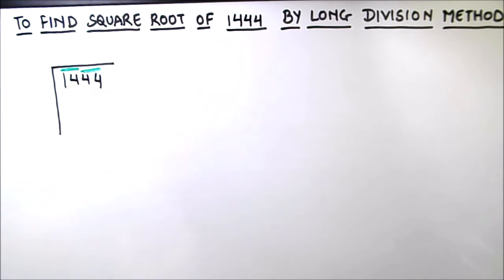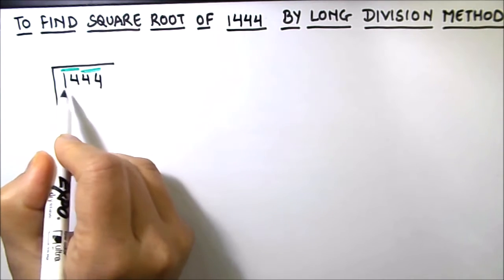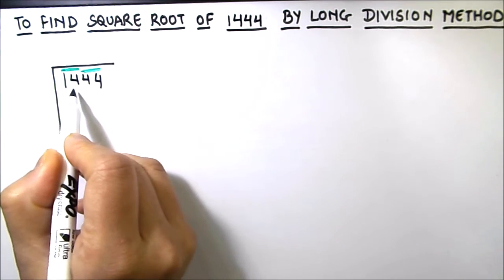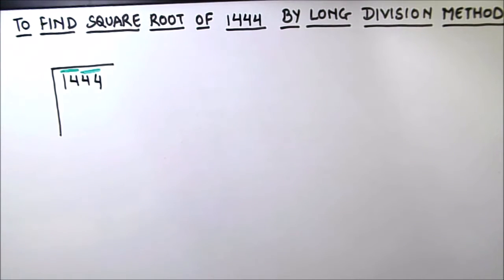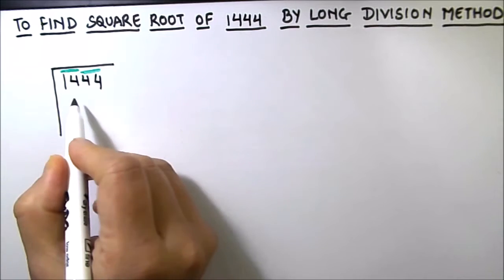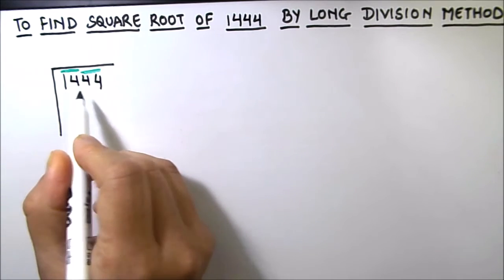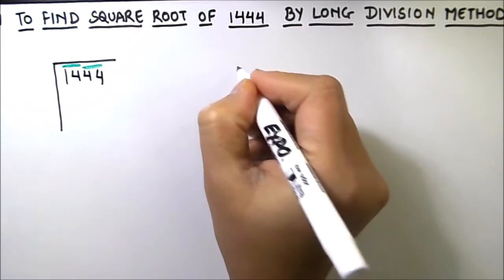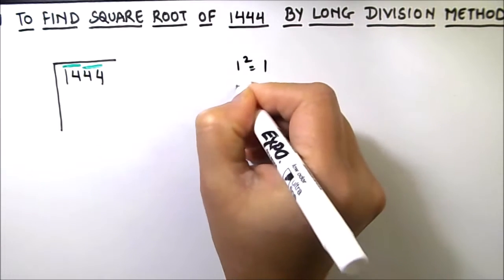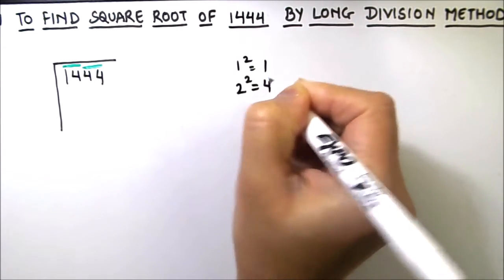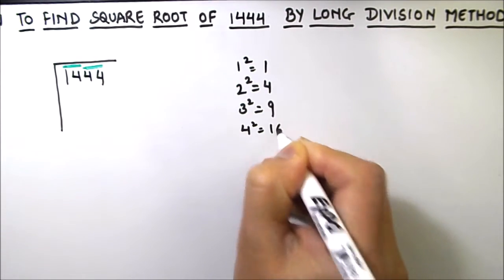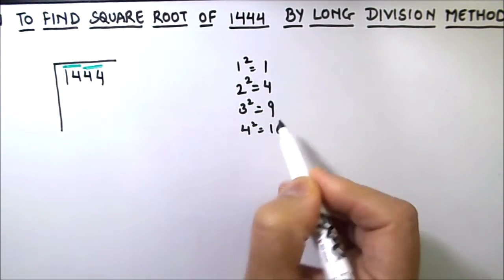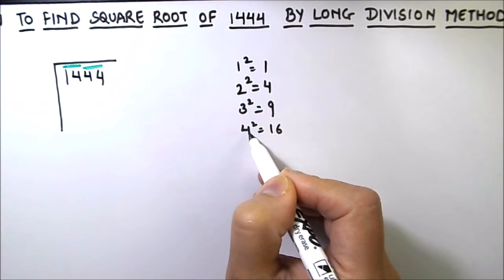Now we will start dividing the number starting from the leftmost group. So we have 14 as our leftmost group. We have to find such a square number whose square is equal to 14 or just less than 14. So we know that 1 squared is 1, 2 squared is 4, 3 squared is 9, and 4 squared is 16. So our number 14 lies in between 3 squared and 4 squared.